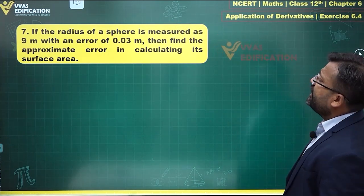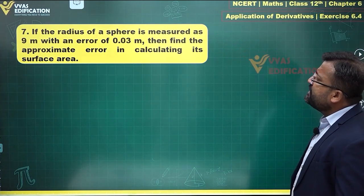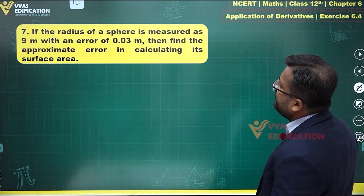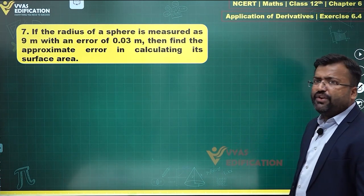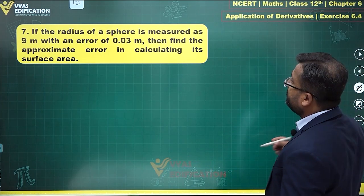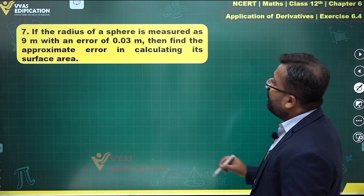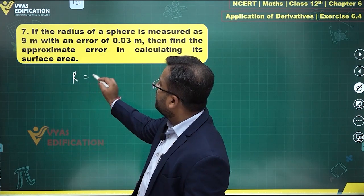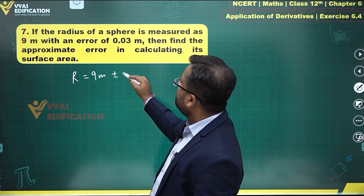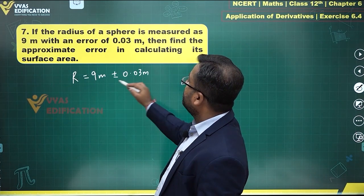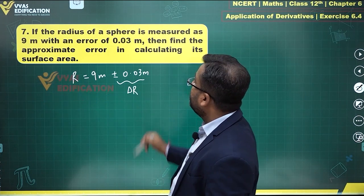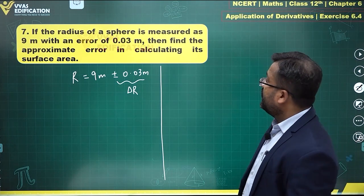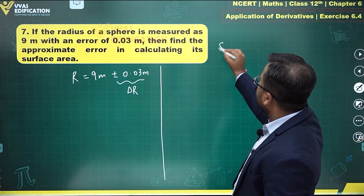The seventh question says: if the radius of a sphere is measured as 9 meters with an error of 0.03 meters, then find the approximate error in calculating its surface area. So the radius is 9 meters, and delta r — that is the error — is plus or minus 0.03 meters.